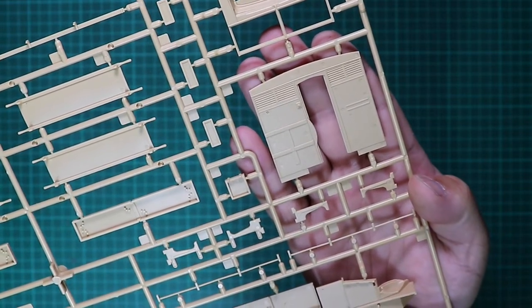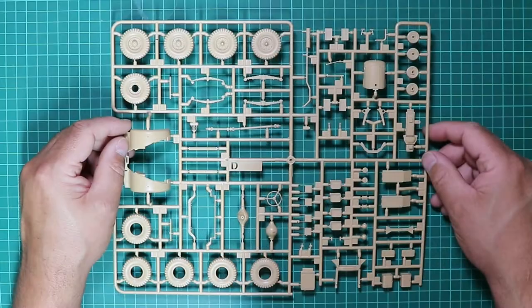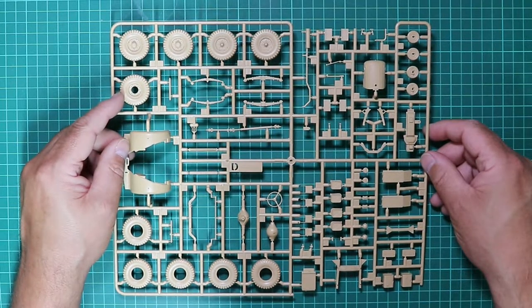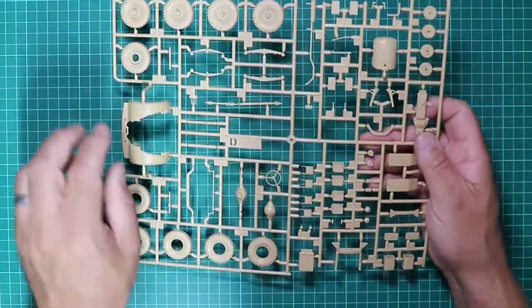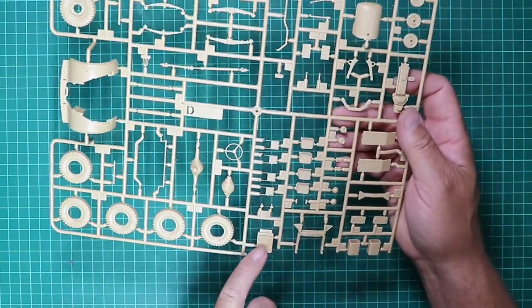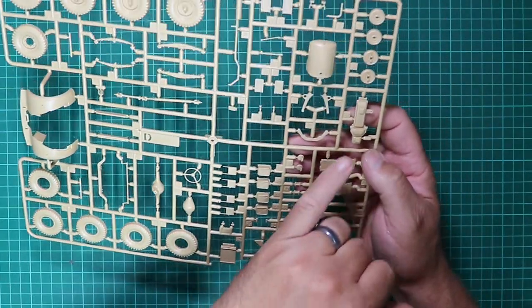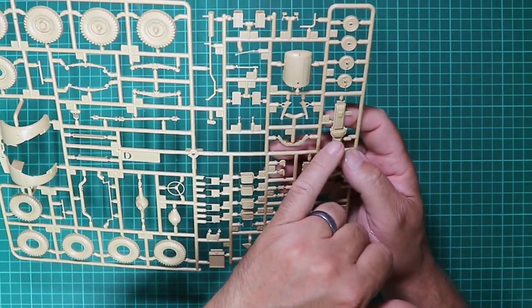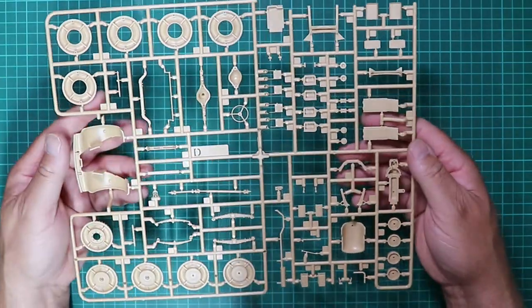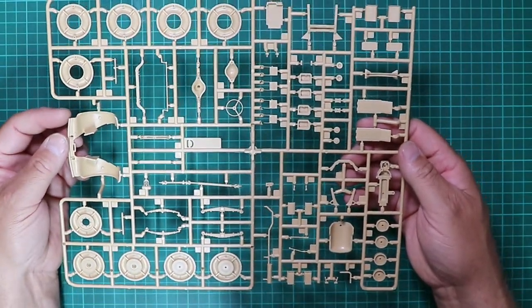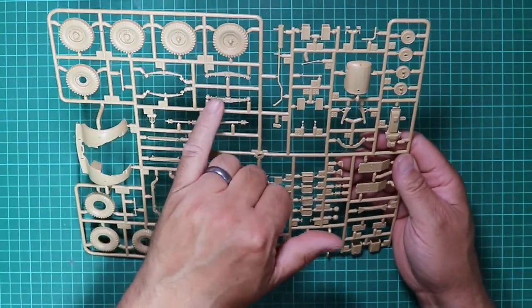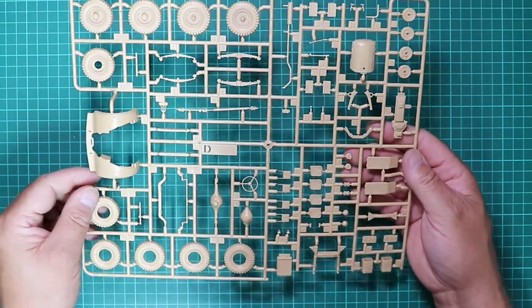Sprue D has the tires and wheels and they do look to be reasonably detailed. Those front wings, steering wheel, differentials, radiator - the matrix work on the radiator looks quite nice. There's the bottom of that engine and the front grille, a little bit of warped plastic there as well so hopefully it doesn't affect any of the parts. Suspension leaf springs look to be detailed, they'll look nice with a wash applied. All in all quite simple but very effective.